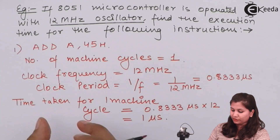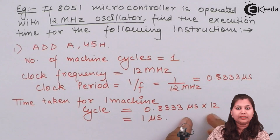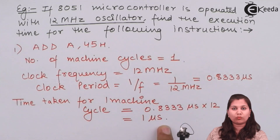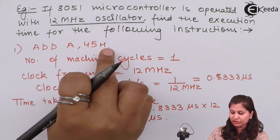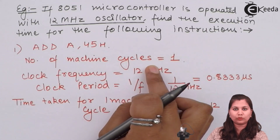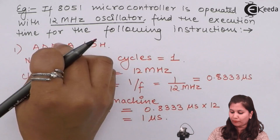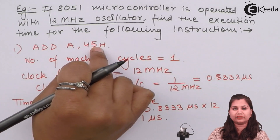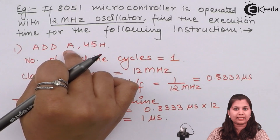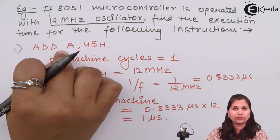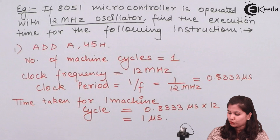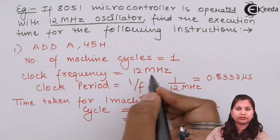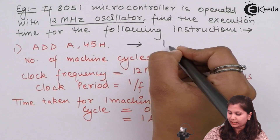The first instruction is ADD A, 45H — adding the contents of the accumulator and the contents of that memory location. The number of machine cycles involved in this instruction is one. Since one machine cycle equals 1 microsecond, this instruction requires 1 microsecond to execute. When fetching this opcode, we directly get the address and data from the memory location, with the second data in the accumulator and the result stored in the accumulator itself. So one machine cycle is involved, and the time taken is 1 microsecond.